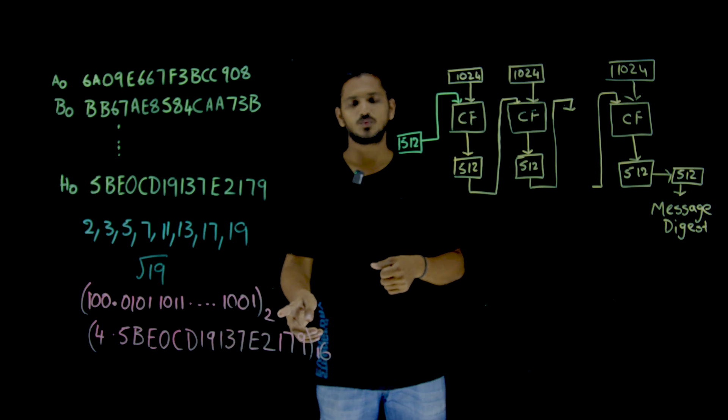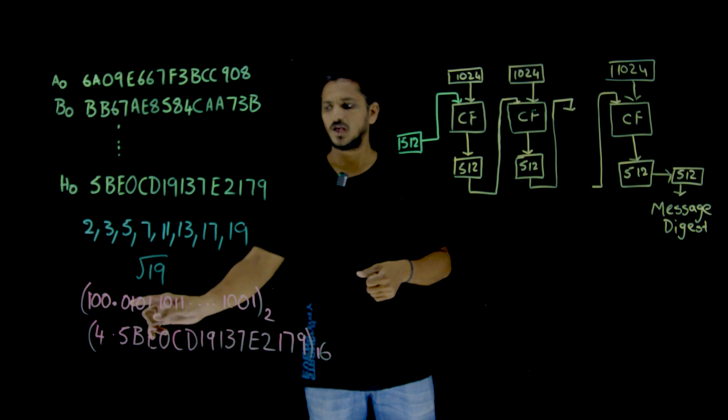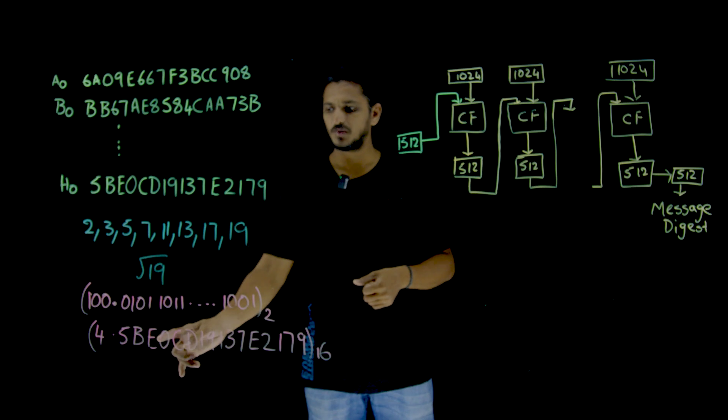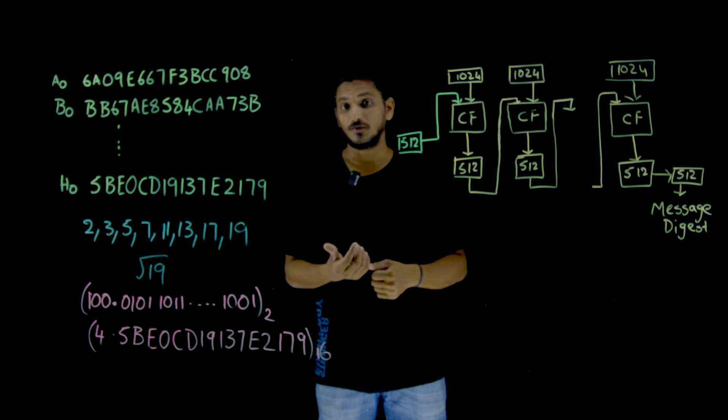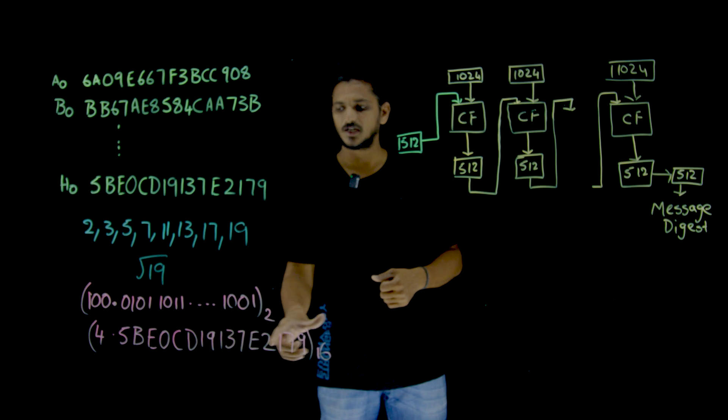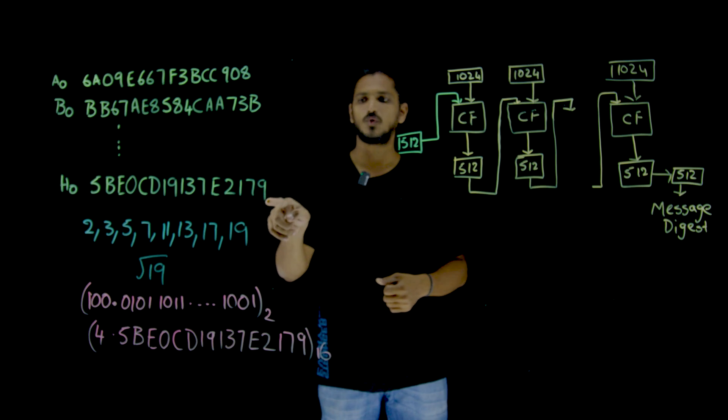If you consider it in binary, this is what you got, base 2. If you consider this in hexadecimal, 1, 0, 0, 4 dot, 0, 1, 0, 1, 5, so on up to 64 bits, 5, B, E, 0, C, D, this is what you are going to get in hexadecimal value. This 16 hexadecimal values, we are going to consider here, 5, B, E, 0 up to 179.